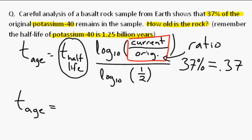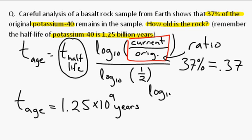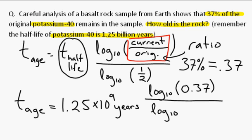T half equals 1.25, and billion is times 10 to the 9 years, times log base 10 of 0.37 divided by log base 10 of one-half. I'm going to just write it in decimal form. You don't have to, I just find it a little bit easier to keep track of what's going on.